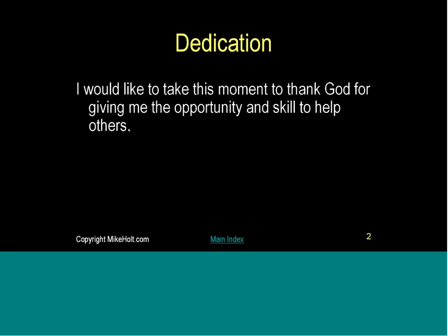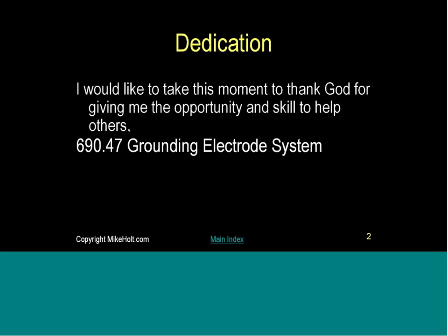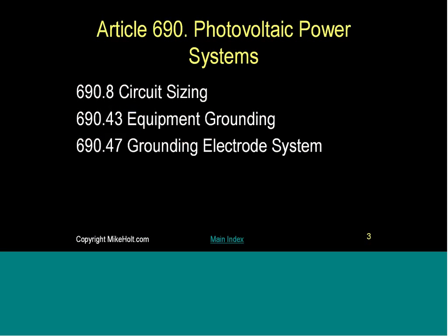The three rules I really want to focus on are in Article 690 on PV systems: 690.8 circuit sizing, which is very controversial and very confusing; 690.43 on equipment grounding; and 690.47 on grounding electrode systems. We're sure we're going to get to 690.8, but we're not sure about the other rules.